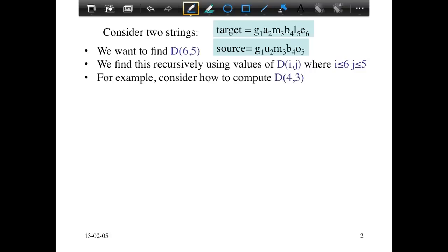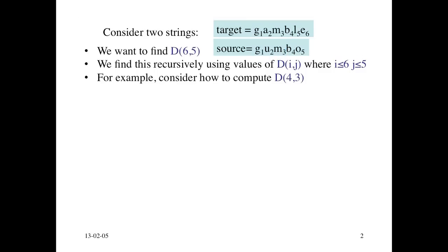D(4,3) represents a sub-problem that we want to solve, and once we understand that, we'll see how to put it all together to find D(6,5). Each time we're going to look at some prefix of the target and some prefix of the source. In this case, we look at positions one to four of the target and one to three of the source, and we want to compute D(4,3).